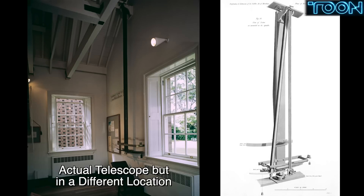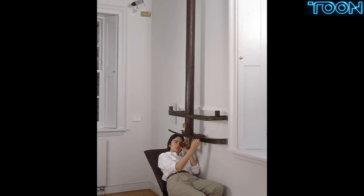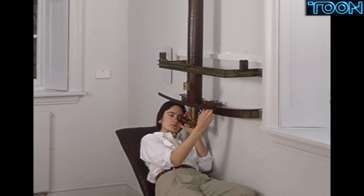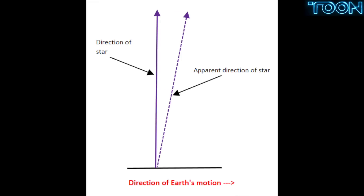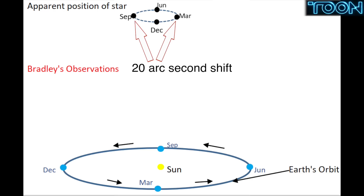Bradley didn't find parallax, but he did mount a telescope in a chimney in a house, pointed almost straight up, and he was able to sight in on stars near the zenith. Over the course of time, every couple of days, he identified that the stars moved — not just one star, but all stars moved very slightly. His telescope was precise to about one arc second, and he noticed that the stars traced a 20 arc second wide ellipse.